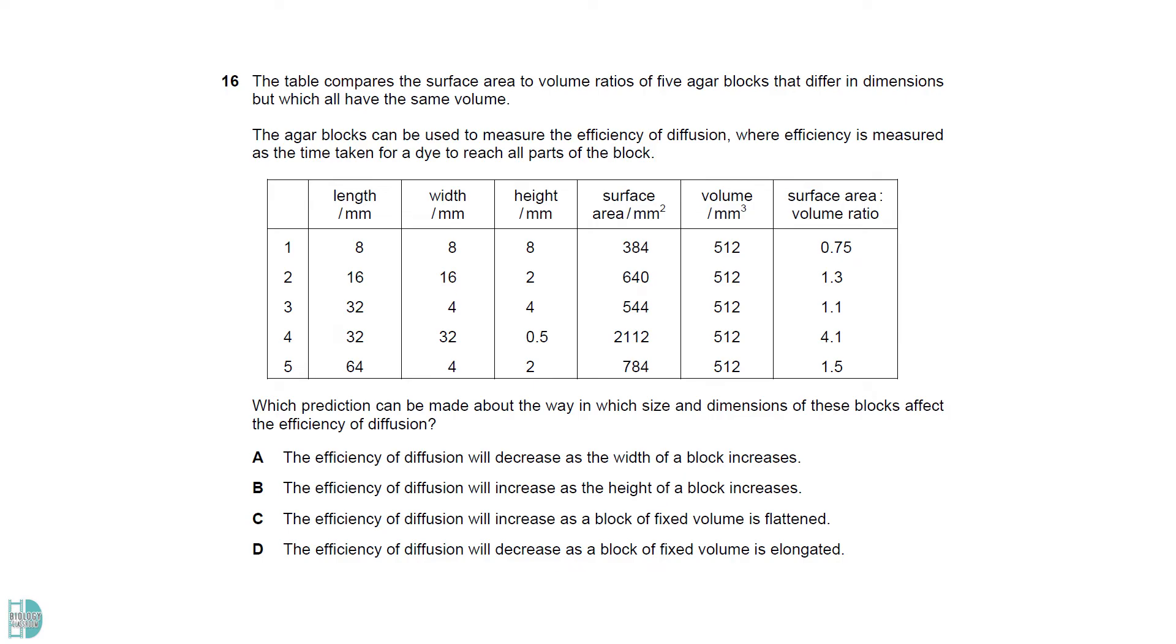The greater the surface area to volume ratio, the greater the rate of diffusion. In the table, 4 has the greatest surface area to volume ratio, hence the greatest diffusion efficiency. Notice how its length and width are very much greater than its height. So this is a flattened structure.